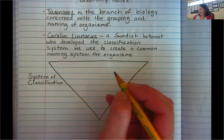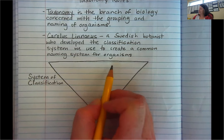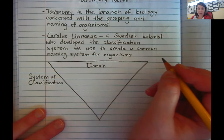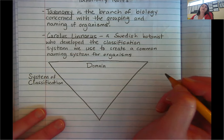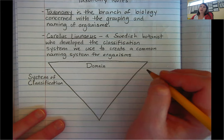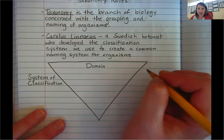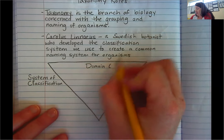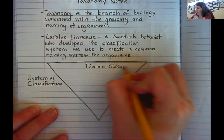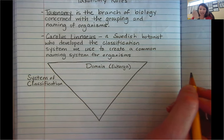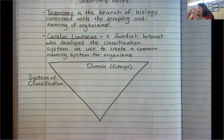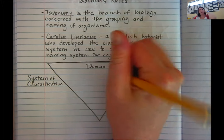The first layer, which is the least specific, is called domain. Now, domain was not added at this time — it was added later, because the discovery of cell structures using the microscope didn't come until later. You may recognize our domain, which is called Eukarya. Sound familiar? Eukaryotic? Eukaryotes? That's very general — we have cells that have nuclei. There are only three domains: Eukarya, Bacteria, and Archaea. We're in Eukarya.